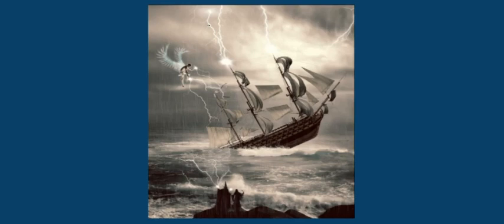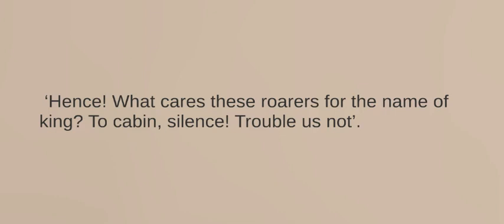Shakespeare uses the characters as devices to introduce emerging themes. He develops the theme of the power of nature when the bosun personifies the waves and uses imperatives. He tells the courtiers, 'hence, what cares these roarers for the name of the king? To cabin, silence, trouble us not.' Imperatives dominate as he tells the courtiers to get out of his way, disrupting the natural order of class relationships. The personification of 'roarers' emphasises that the king is powerless against nature, heightening his vulnerability as well as the vulnerability of those on board the ship.